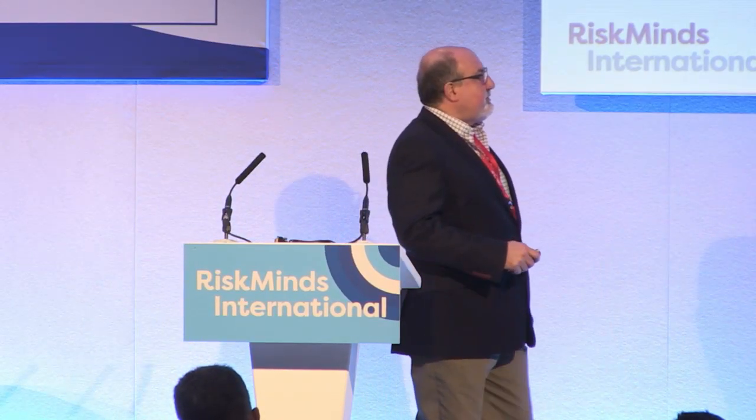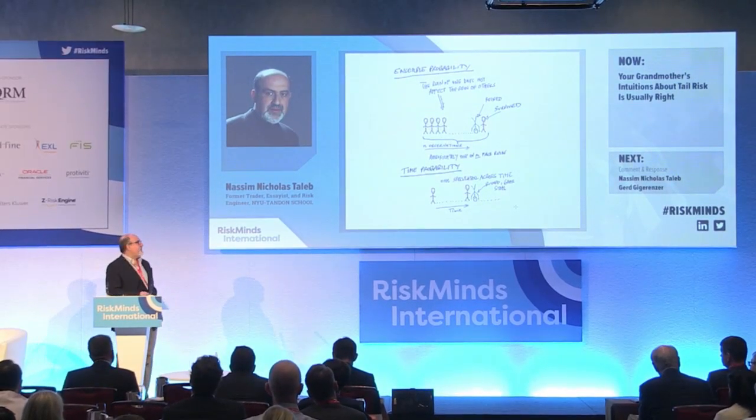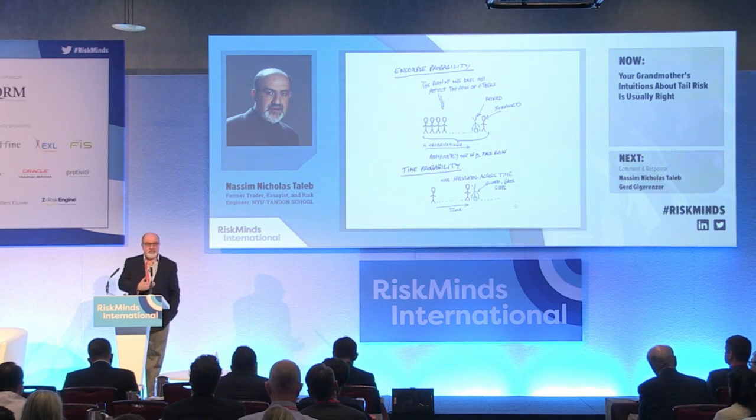We know as options traders that all analysis of option selling doesn't count because eventually, if you are ruined, you're going to be ruined. For the ensemble average and time average to match, you need something called ergodicity. The Kelly criterion — Thorp's strategy — is ergodic. It allows you to capture the effective alpha of the market, but only on the condition of the absence of ruin. Markowitz's approach fails this condition.